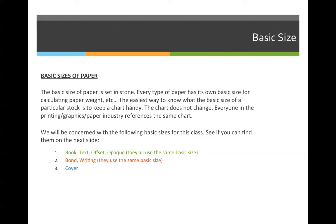Let's move on back to basic size. The basic size of paper is set in stone. Every type of paper has its own basic size for calculating paper weights. The easiest way to know what the basic size of a particular stock is is to keep a chart handy. The chart does not change — everyone in the printing, graphics, and paper industries references the same chart.